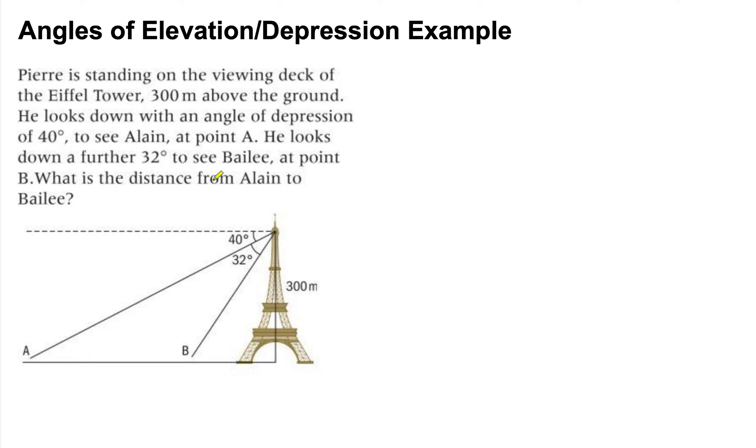Hopefully you can see that the thing required is the distance from Alain to Bailey, which is this green distance. Now, it's not part of a right-angled triangle. It's part of a non-right-angled triangle, which means you might think,